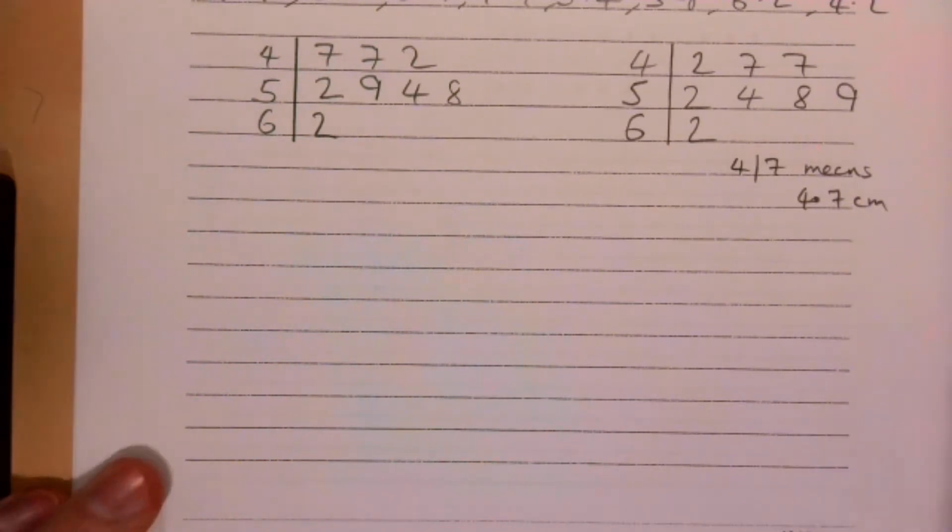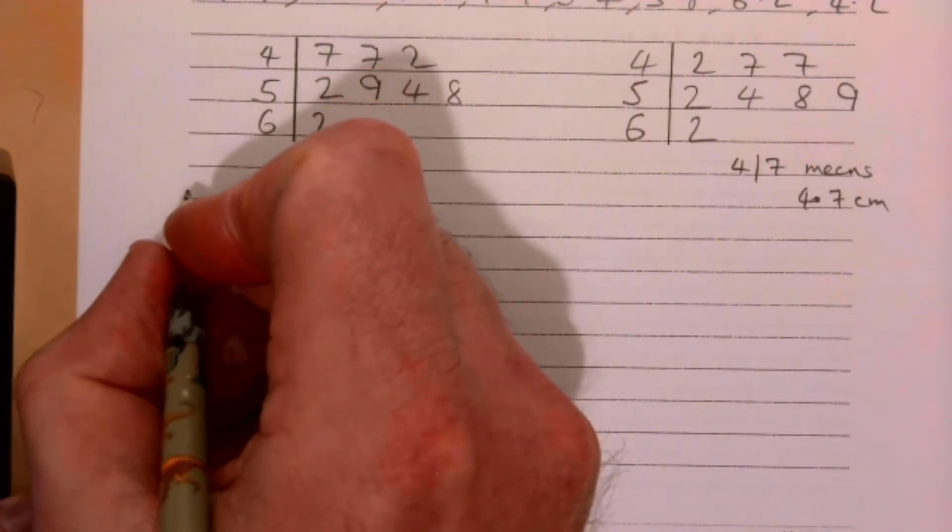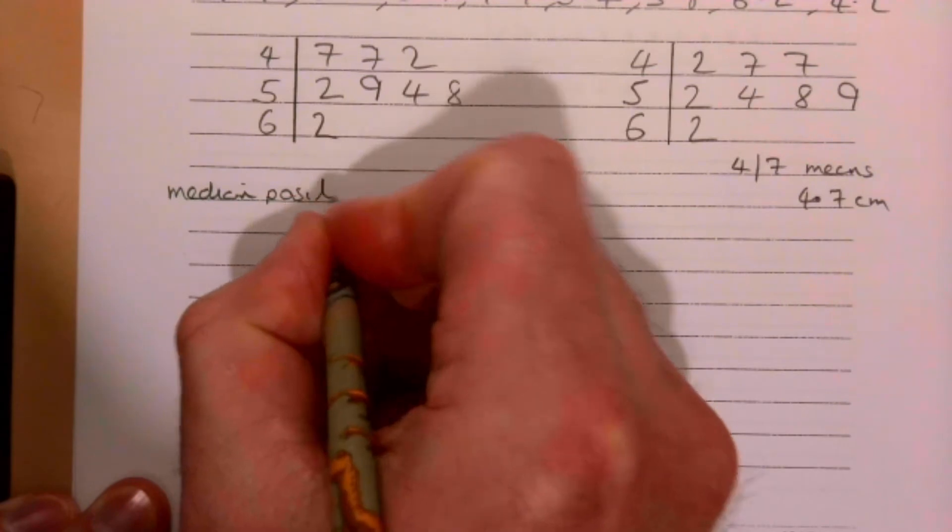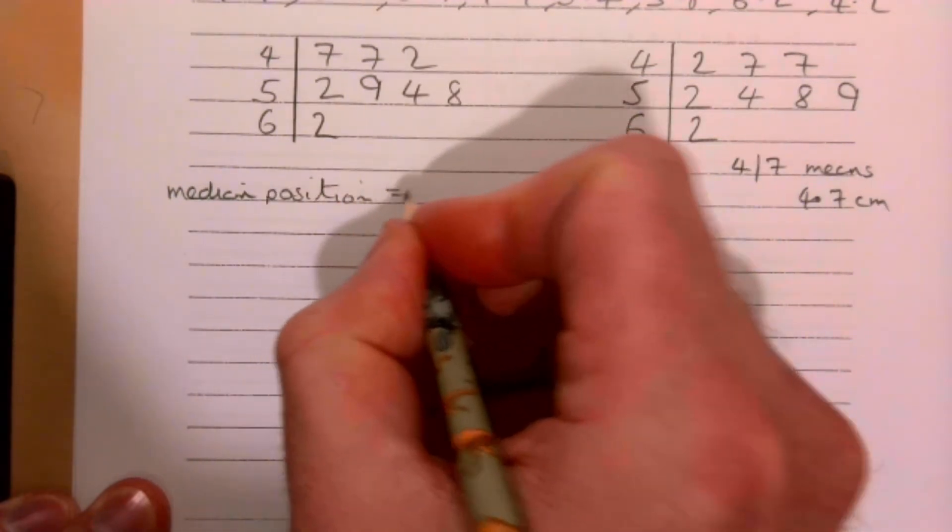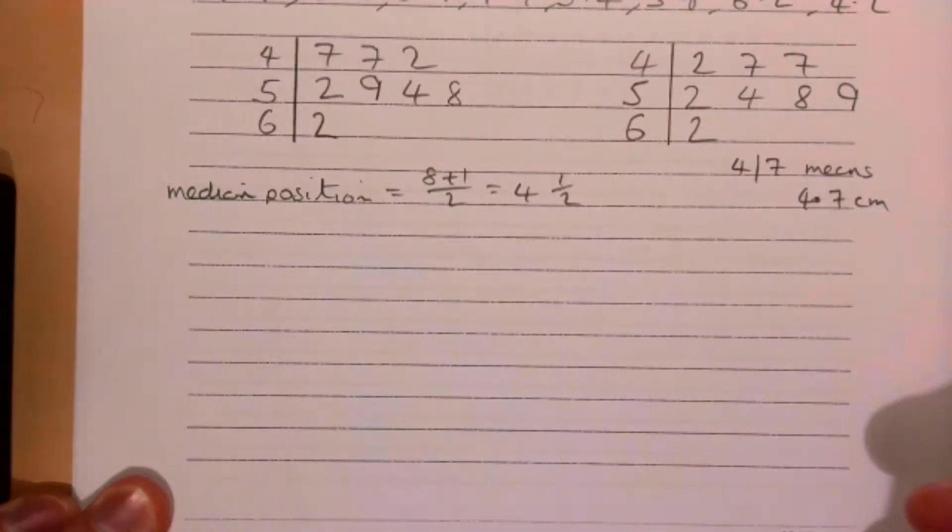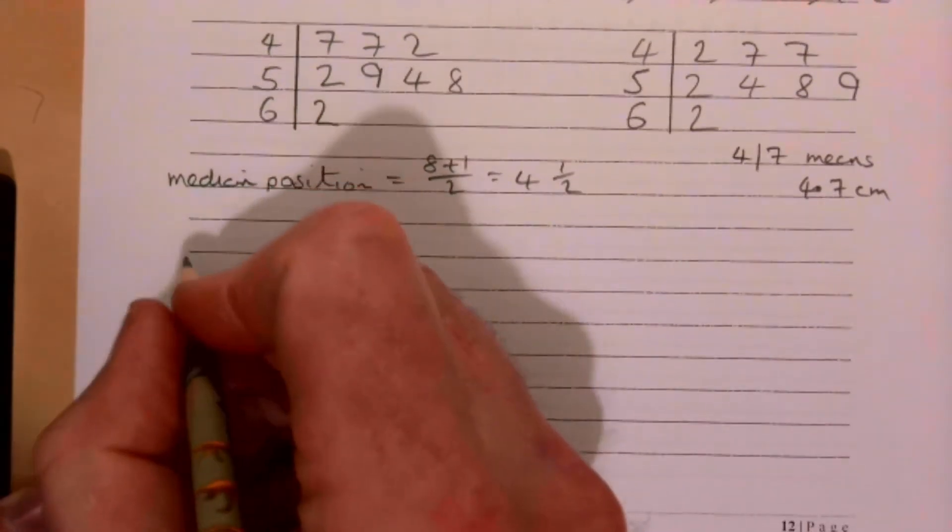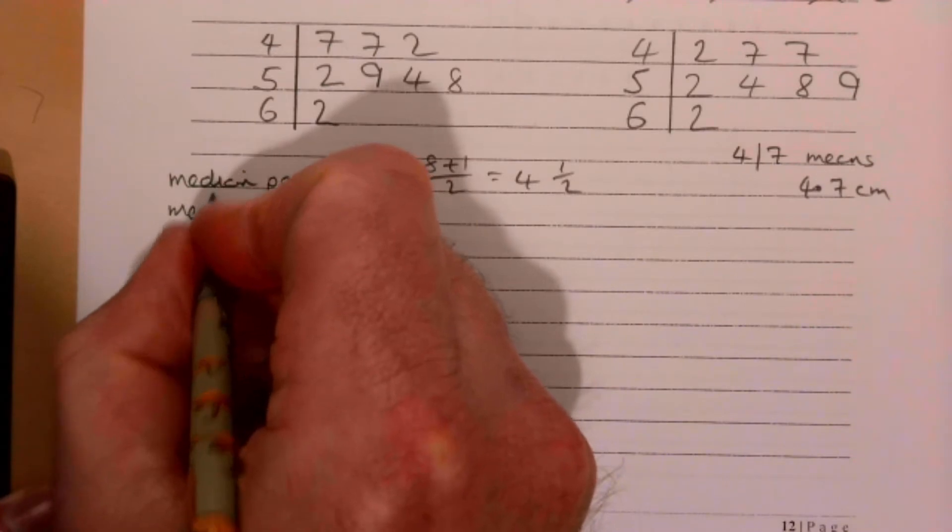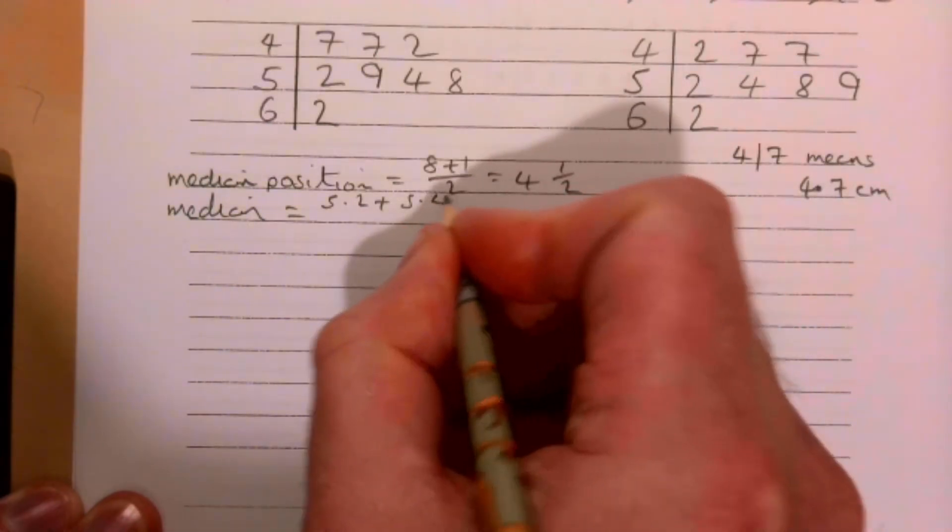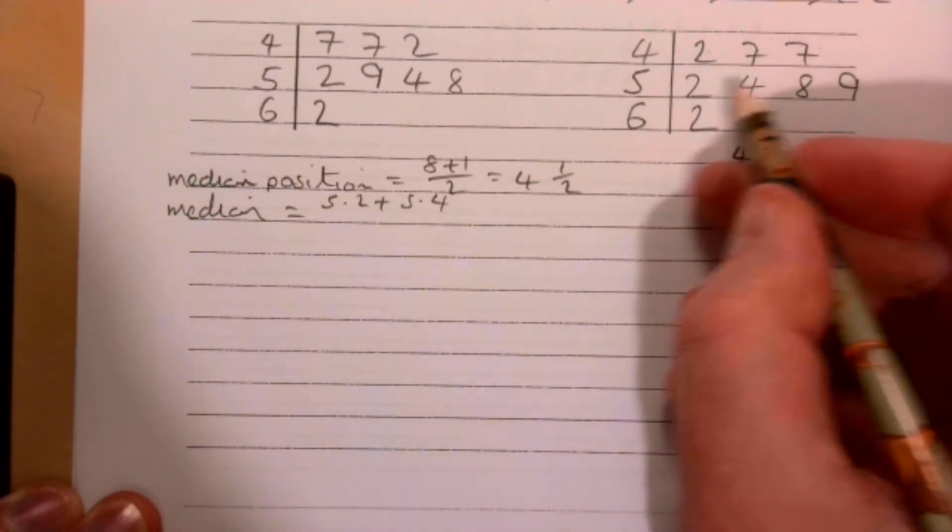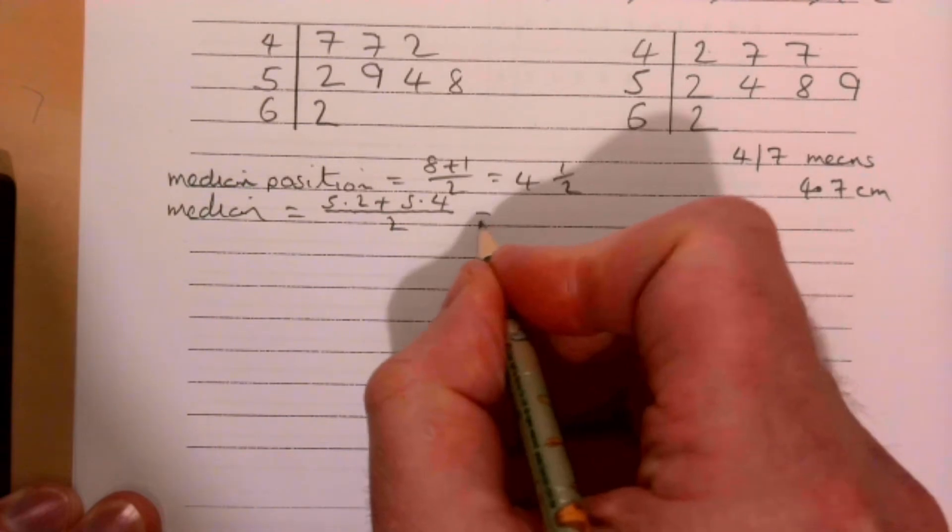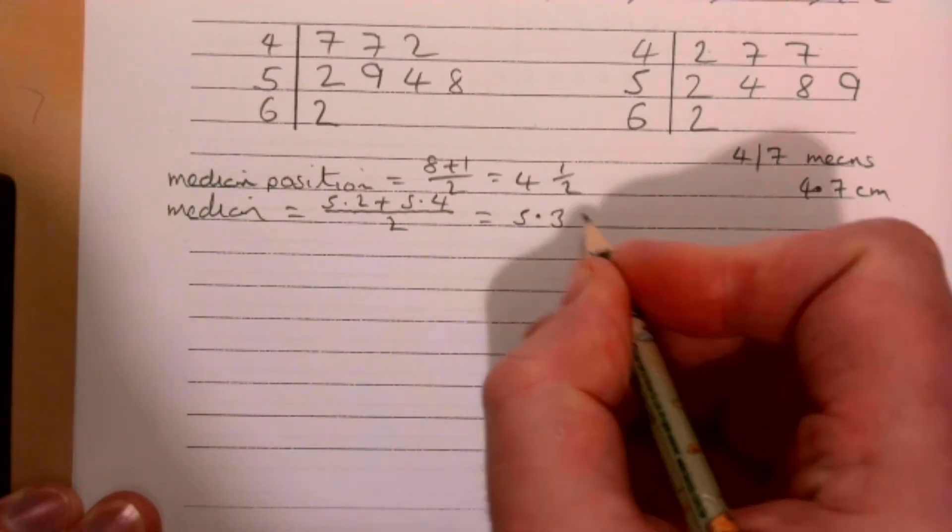Median and IQR. Median position: there's eight of them, so 8 plus 1 over 2, which is 4.5. Therefore my median is equal to 5.2 plus 5.4, that's the fourth and fifth values, all over 2, which equals 5.3.